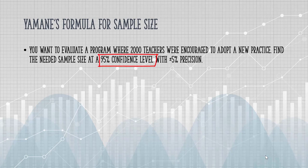That 95% means if you were to repeat your experiment over and over, then 95% of the time — 95 out of 100 of those experiments — would include the true population parameter.